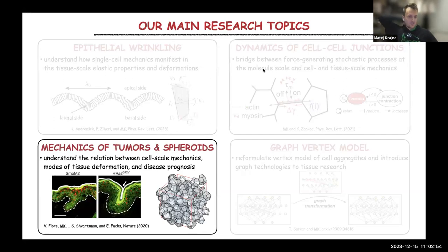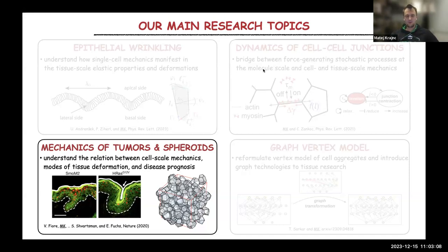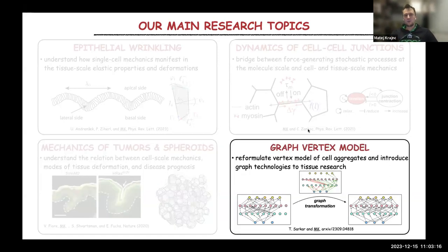And then mechanics of tumors and tumor spheroids — here we are trying to understand the relation between cell-scale mechanics, modes of tissue deformation during tumor growth, and also try to say something about disease prognosis — how mechanical mechanisms can affect the disease outcome. Finally, we are developing different types of computational approaches, and one of them is the graph vertex model that I will talk about in this seminar.